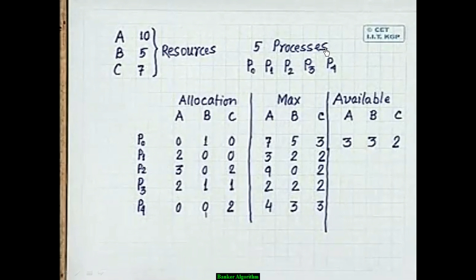We're given the Allocation and Max matrices. First, calculate Available. For resource A: sum the allocation column — 2+3+2 = 7, and total is 10, so Available[A] = 10 − 7 = 3. For B: 1+1 = 2 (and other rows), 5 − 2 = 3. For C: total 7 resources, subtract allocated (five), giving Available[C] = 2. So Available = [3, 3, 2].